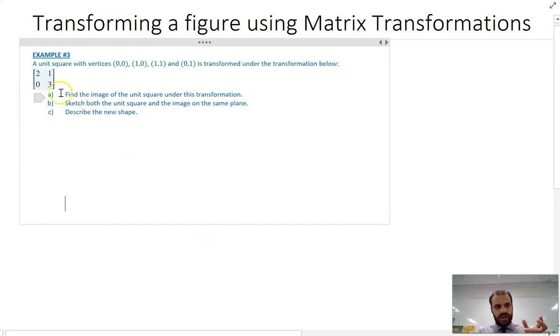You might get a question that looks like this: a unit square with vertices (0,0), (1,0), (1,1), and (0,1) is transformed under the transformation below. Using that linear transformation matrix, find the image of the unit square, sketch both the unit square and the image on the same plane, and describe the new shape.